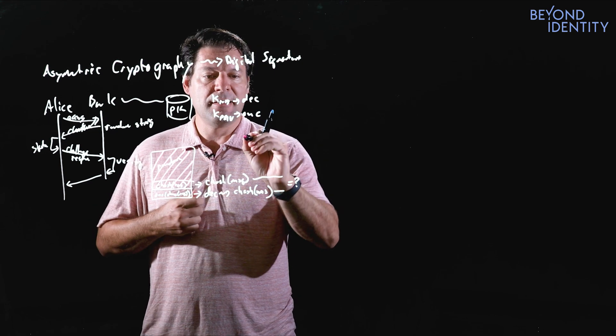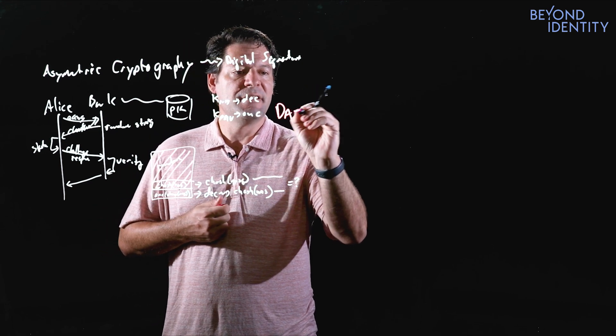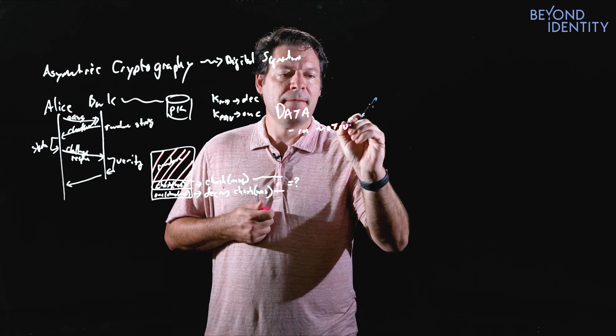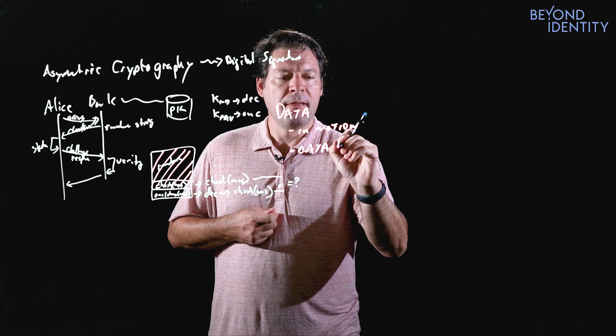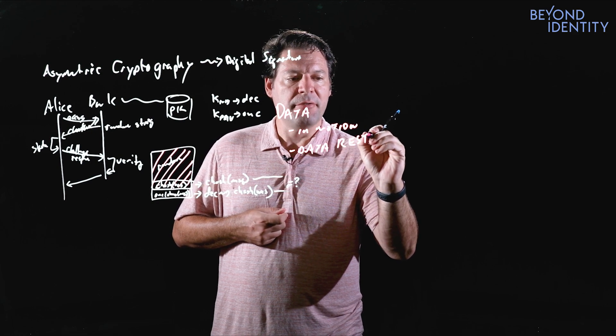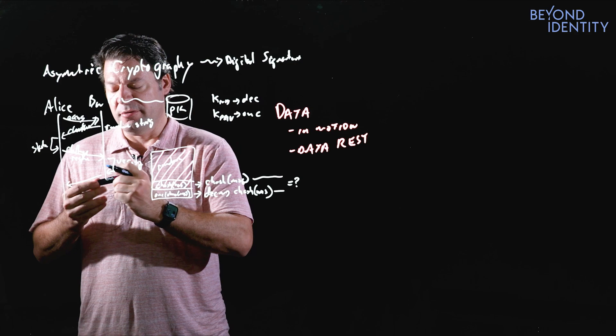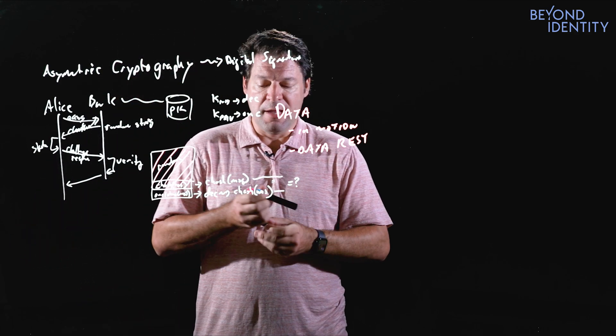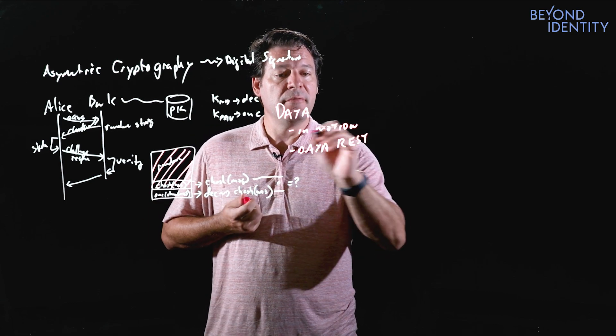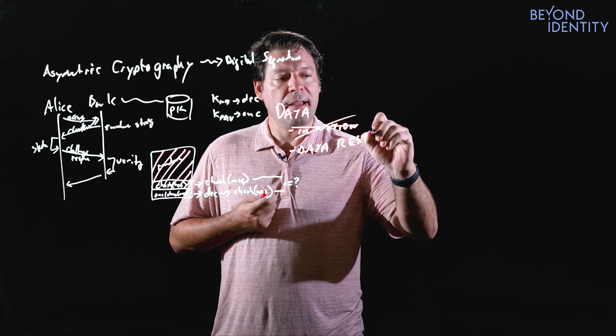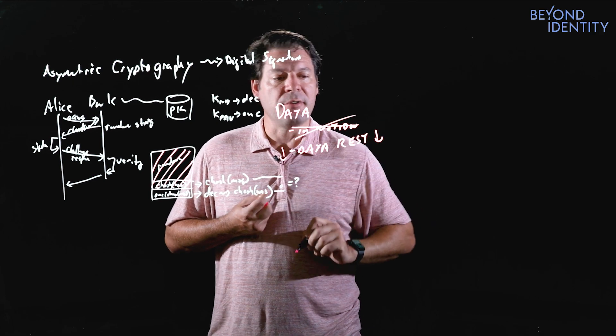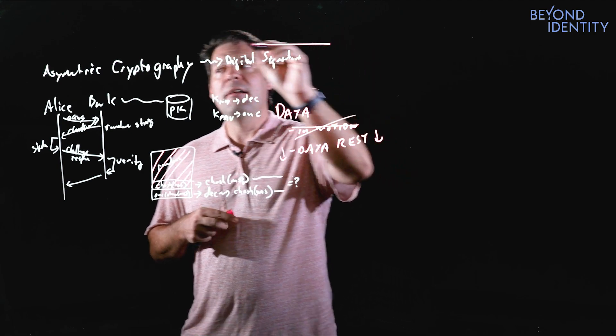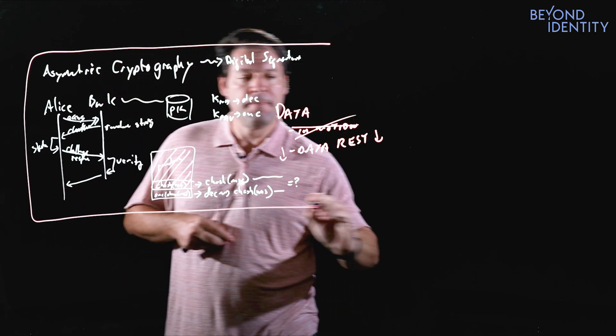And we said, hey, when we're talking about a surface area that we have to worry about from a password perspective, we have data in motion and we have data at rest. And we said if we took this sort of approach, the private key doesn't have to move. Now, it doesn't have to move doesn't mean doesn't move, but it doesn't have to move. And by not making it have to move, the motion problem went away and the data at rest problem drastically shrunk. But we didn't actually say how are we going to guarantee it doesn't move?